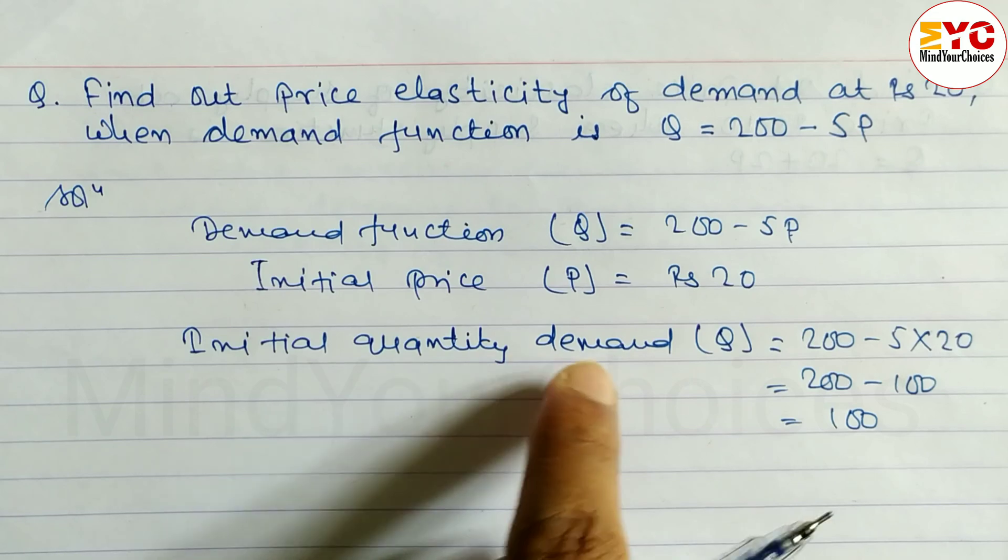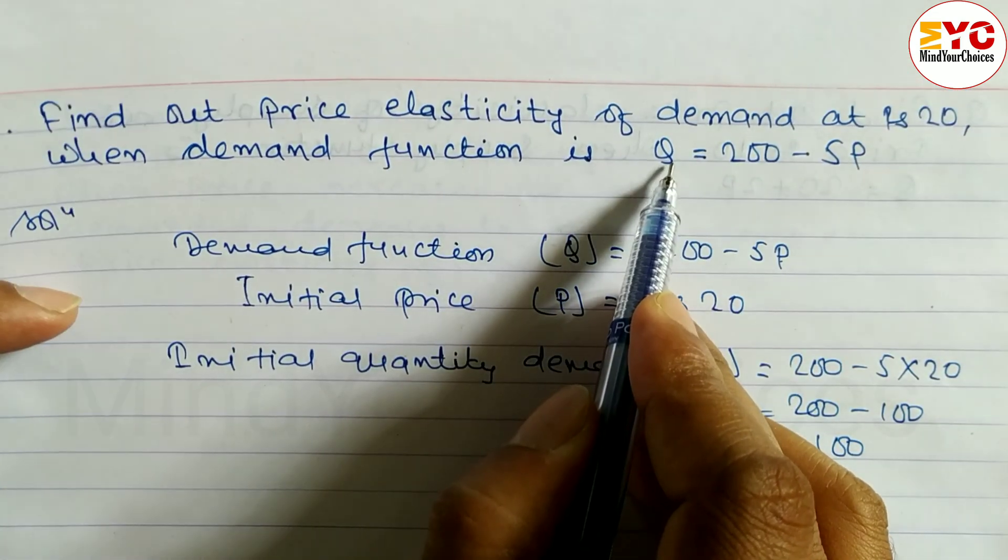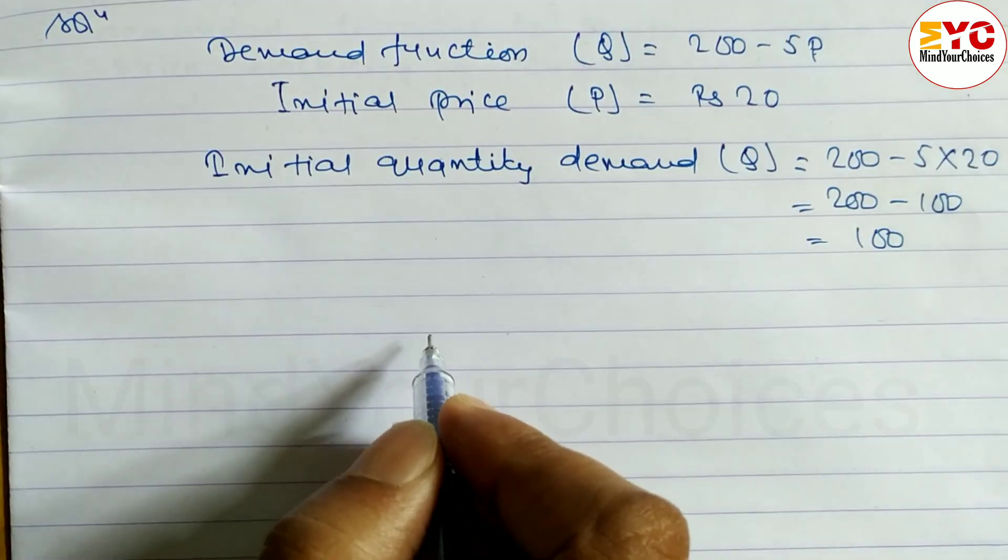So the initial quantity demanded is 100. Now we have to find out the derivative of Q with respect to P.